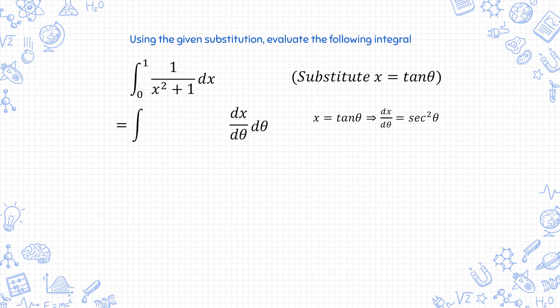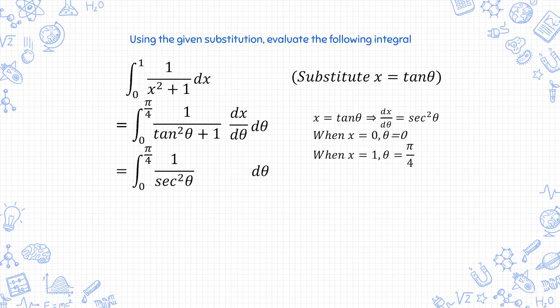For definite integrals, don't forget to work out the new limits as well. So here, when x equals 0, tangent theta is 0, so theta is 0. And when x equals 1, tangent theta is 1, so theta is pi over 4. And you can just write it here like this. Next, apply the substitution directly. 1 over (x squared plus 1) is 1 over (tangent squared theta plus 1). Using the trig identity, tangent squared theta plus 1 is secant squared theta. Sub in the value of dx/d theta, you're integrating 1 with respect to theta, which gives theta, and easily you'll find the final answer, pi over 4.